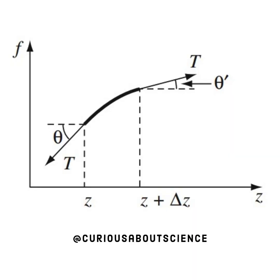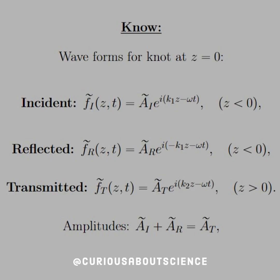If we have a string under some tension, the tension pulling down on the string from some wave front at position Z forms some angle theta, and at Z plus delta Z we have a new angle theta prime but with the same tension. For a knot at Z equals zero, the incident wave F1 tilde of Z of T is equal to A1 e to the i K1 Z minus omega T, for everything to the left of Z equals zero.